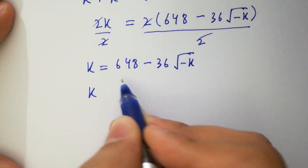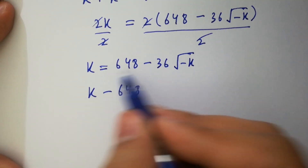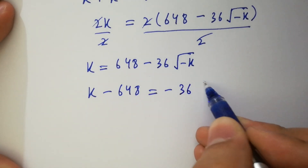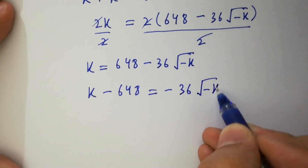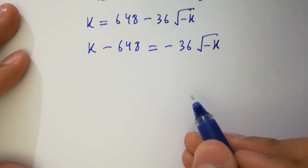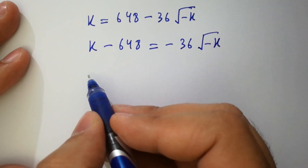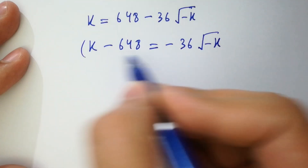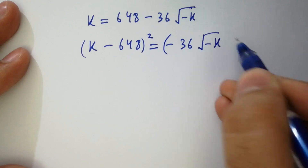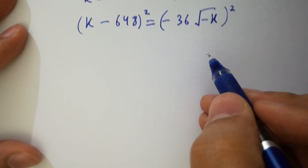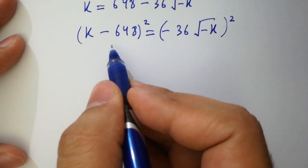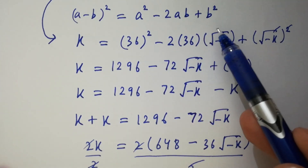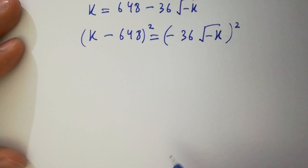Rearranging, k minus 648 on the left hand side equals minus 36 square root of minus k. In the next step, we solve by squaring both sides, applying the formula (a minus b)² equal to a square minus 2ab plus b square.